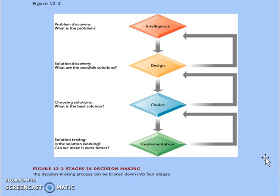Figure 12.2 shows these four stages and how they are interlinked. The intelligence stage involves problem discovery — what is the problem? The design stage involves solution discovery — what are the possible alternatives or solutions for the identified problem? The choice stage involves choosing solutions — what is the best solution? And the last is solution testing, or implementation — is it the best working solution, and can we make it work better? That comes to be known from ground realities after implementation.